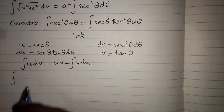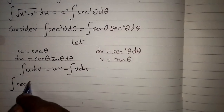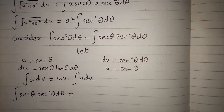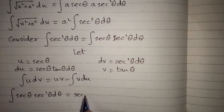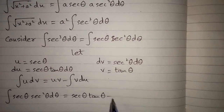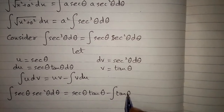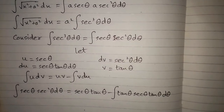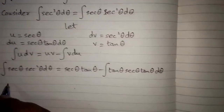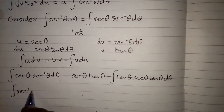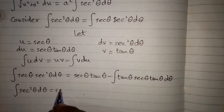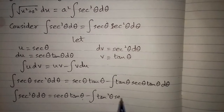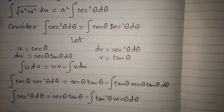Applying the integration by parts formula — integral of u dv equals uv minus integral of v du — we get sec θ times tan θ minus the integral of tan θ times sec θ tan θ dθ. After simplification, the integral of sec cubed θ dθ equals sec θ tan θ minus the integral of tan squared θ sec θ dθ.